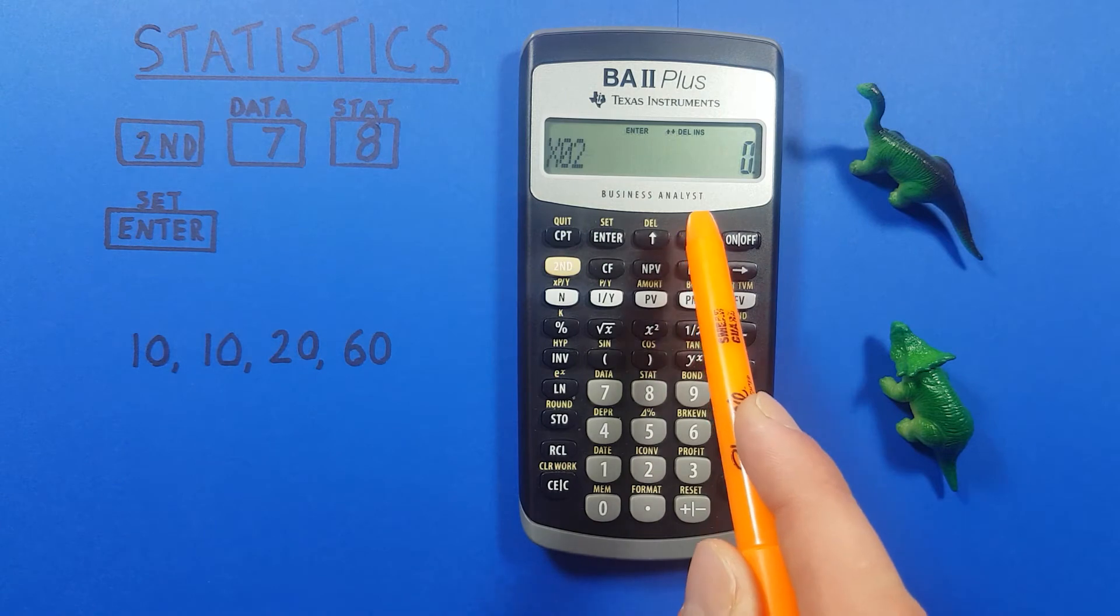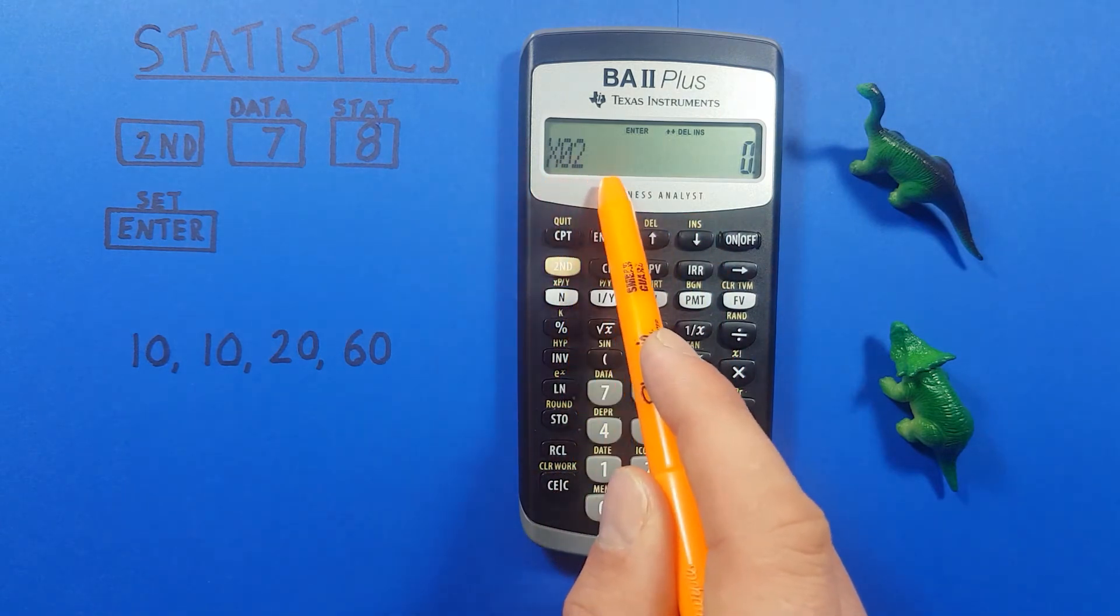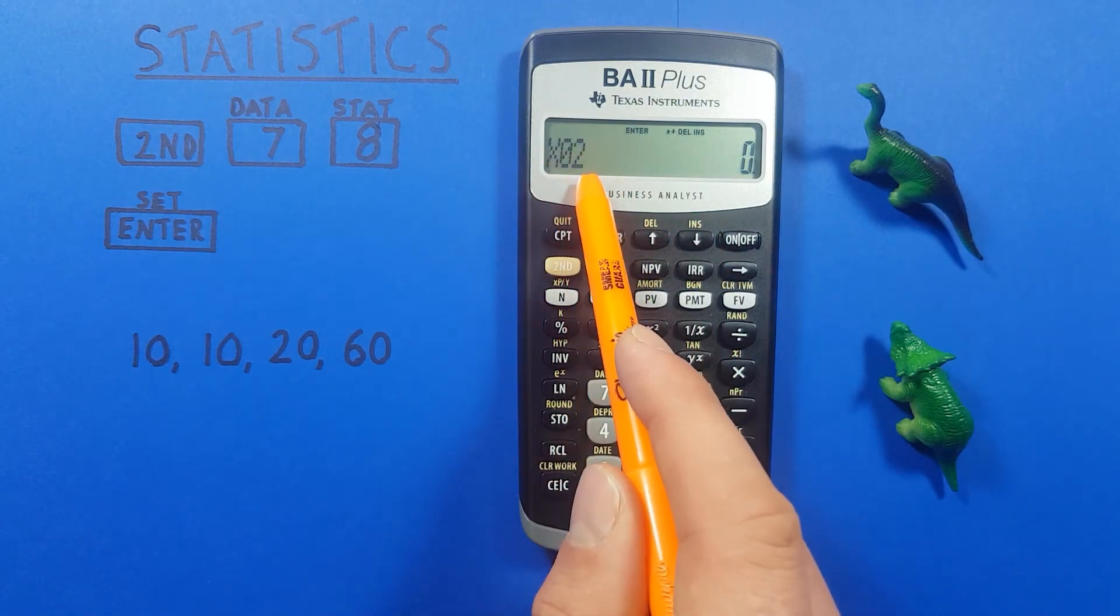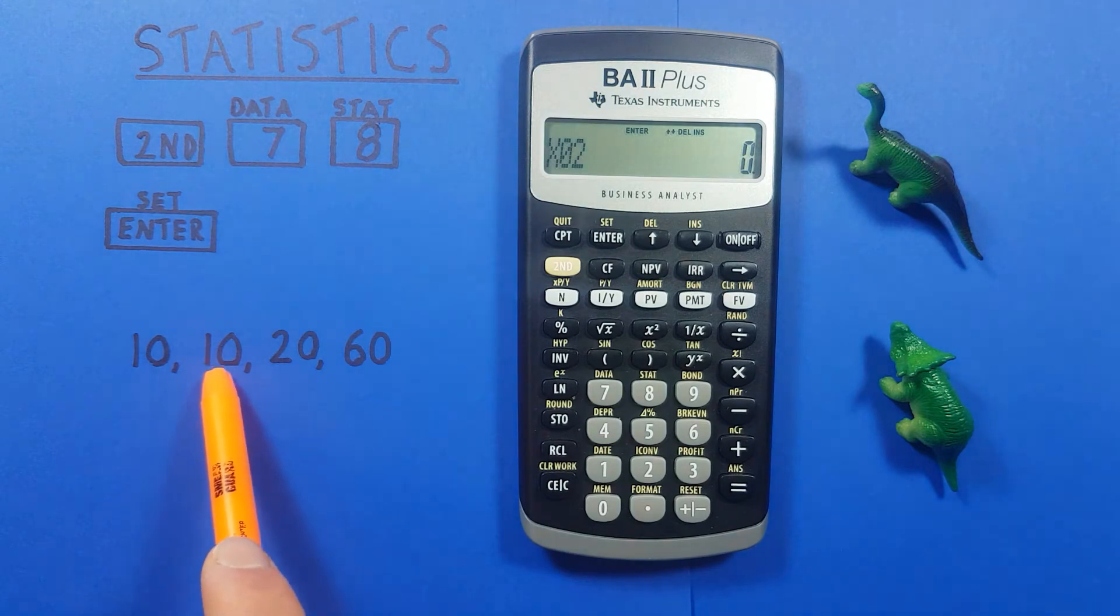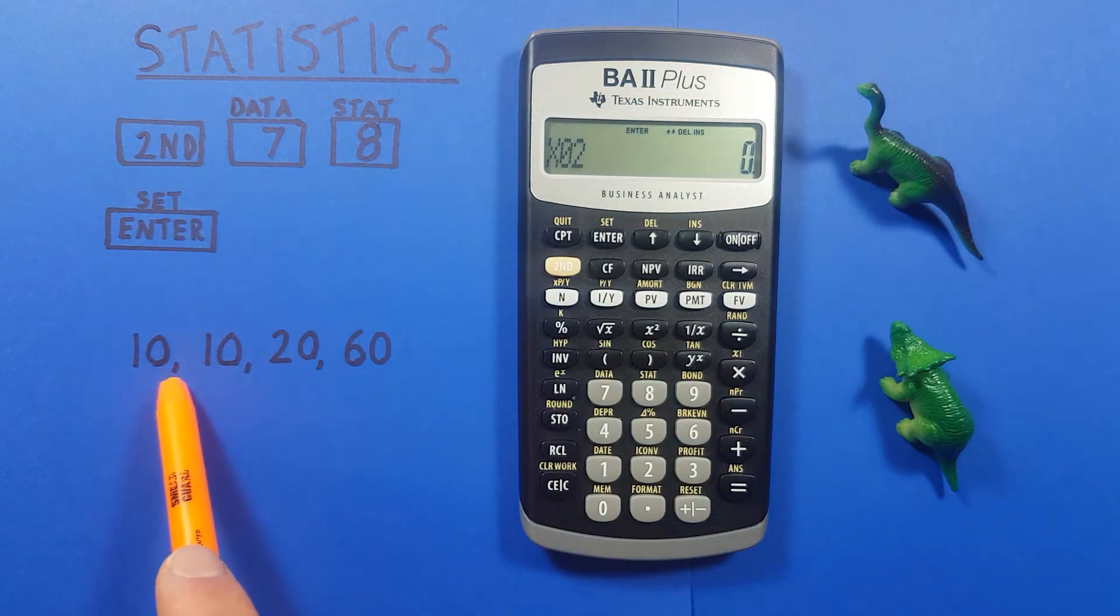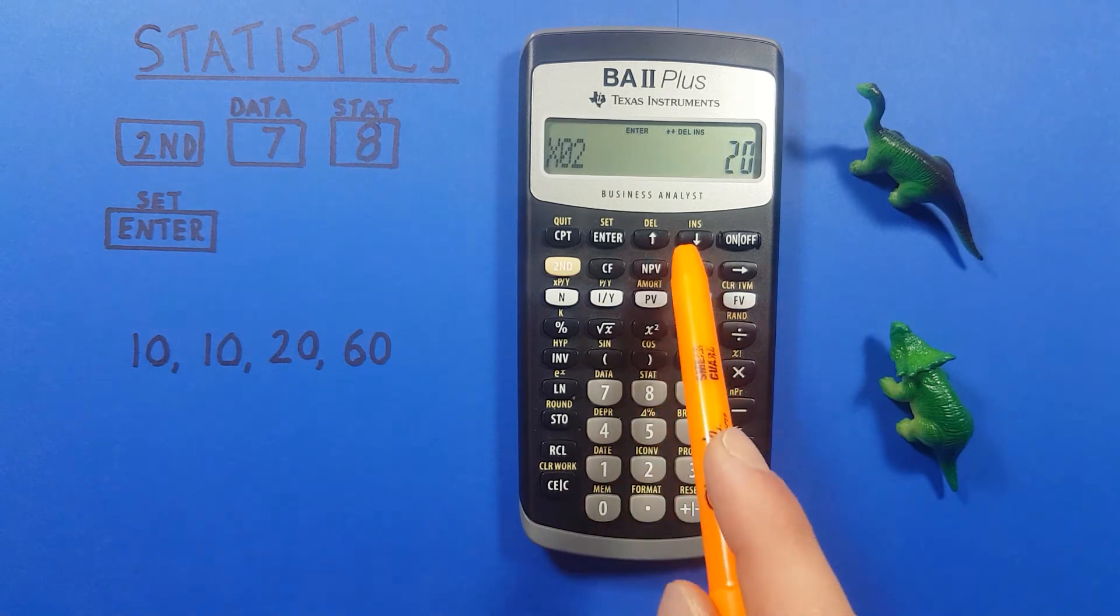So we press enter, go down, now we have x2 which is our second piece of data. We already entered the 10 because we entered it as occurring twice so next we have 20. Enter.